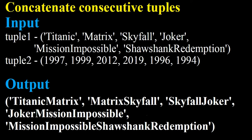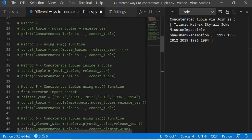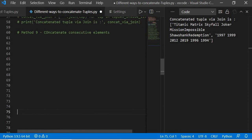The next and last topic is to concatenate consecutive tuples. We have movie names: Titanic, Matrix, Skyfall, Joker. We want to concatenate consecutive elements — Titanic with Matrix, Matrix with Skyfall, Skyfall with Joker, and so on. We have the movie tuples already. We need to run a for loop, so we write output_tuple equals the result of adding consecutive elements.